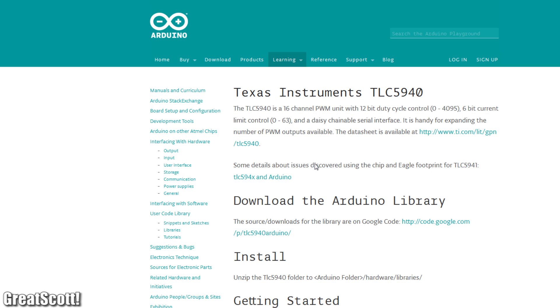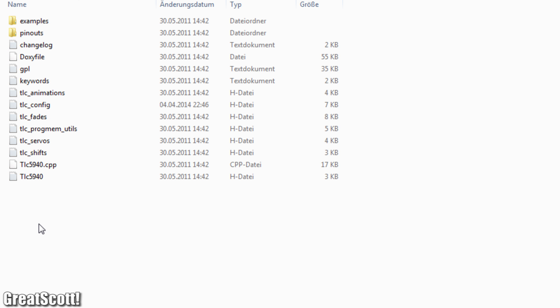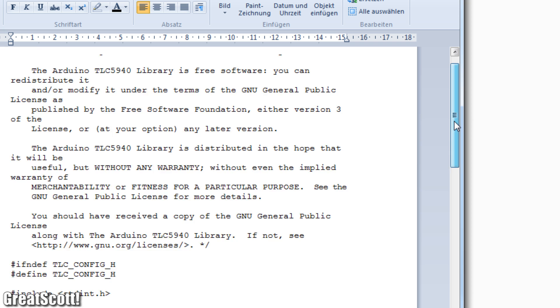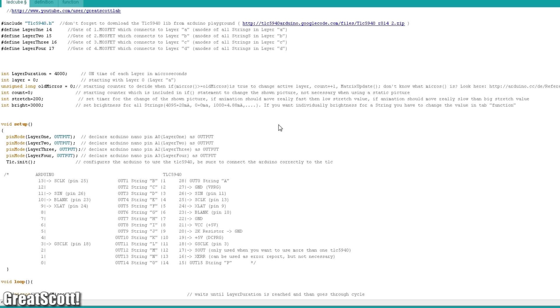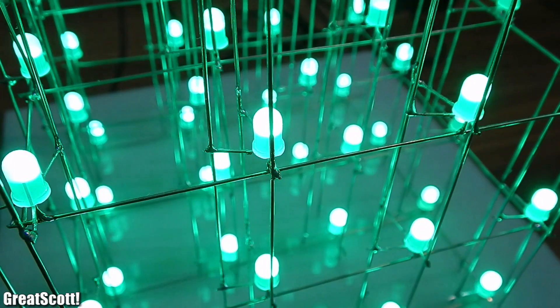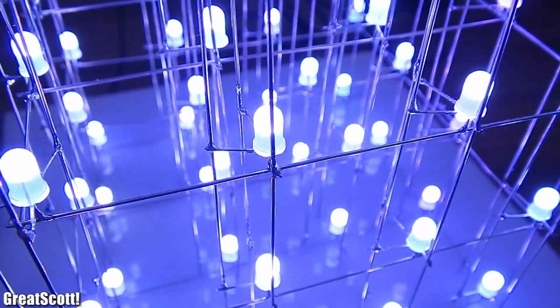I hope you already downloaded the TLC5940 library from the Arduino playground, because we need to modify it. I open the TLC config file in the library and change the value for used TLCs from 1 to 3. This is very important. Now just download my code and upload it to the cube. The animation is very simple and the cube will flash in a few different colors.